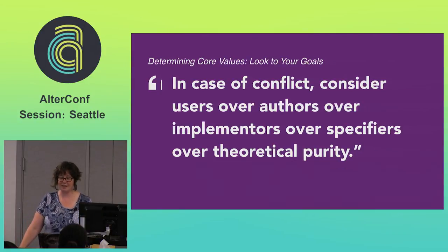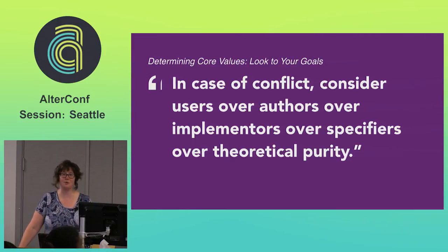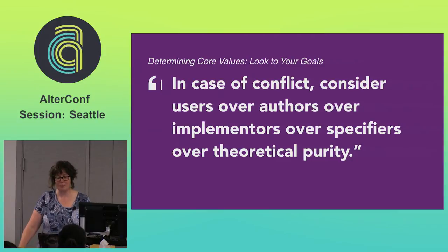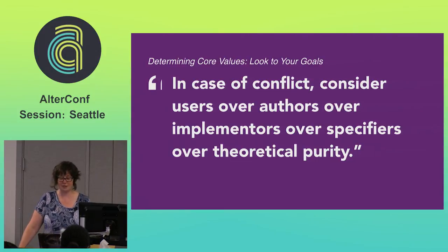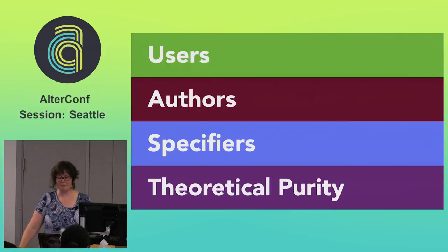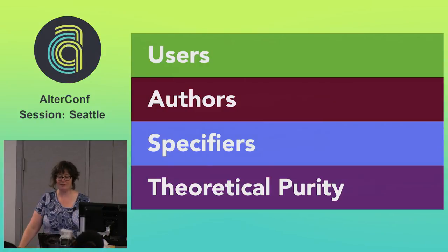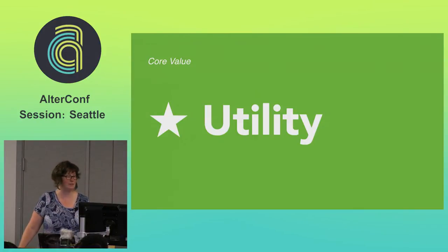Looking at the W3C's priority of constituencies was part of how we started talking about our core values. Who comes out on top when there's a conflict? In an organization with many different stakeholders with conflicting goals and interests, they need something like this to give structure to decision making. Because they've put end users ahead of everything, we can guess at a value of utility — usefulness — standing behind that system.